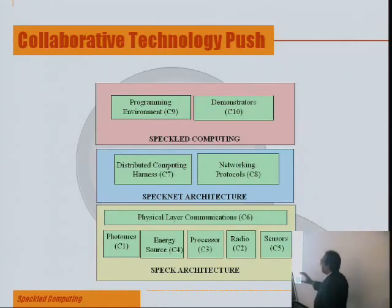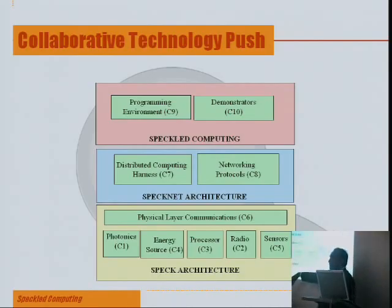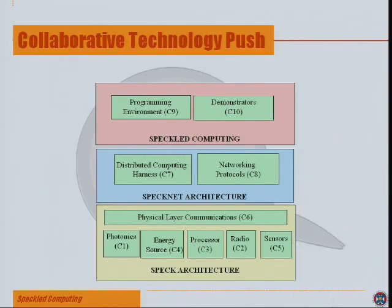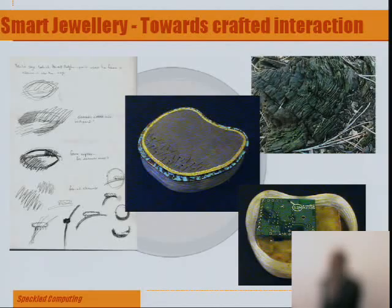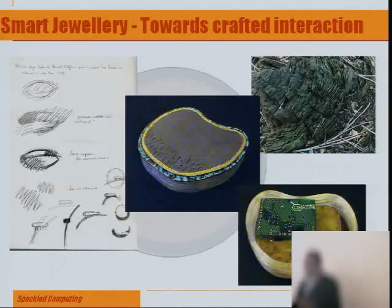Drilling down one layer — that's the spec architecture. Photonics is being done in the Physics Department at St. Andrews University, along with the battery. The processor is at Edinburgh, the radio at Glasgow, sensors are off the shelf. The physical layer comes from Strathclyde and integration takes place at Edinburgh, along with networking protocols, distributed computing harness, and programming environments. That's important because in highly resource-constrained systems you want to understand how decisions made at one level impinge at another — both vertically and horizontally. We have 26 people working on this full time until 2010.